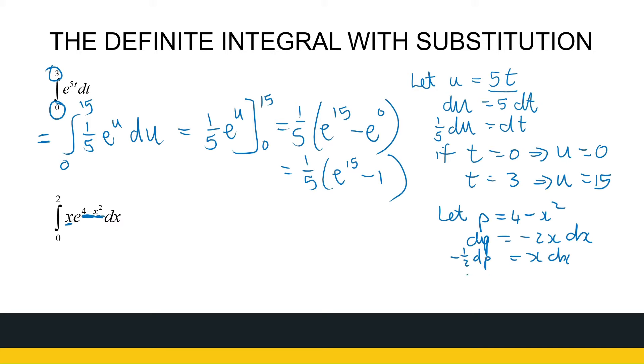Now I see x goes from 0 to 2. So if x is equal to 0, then p is going to be 4. If x is equal to 2, then p is going to be 4 minus 4, which is 0. So I make my substitution.